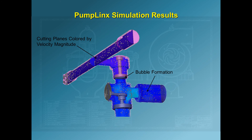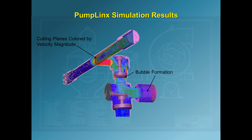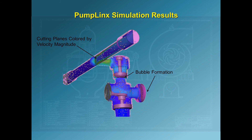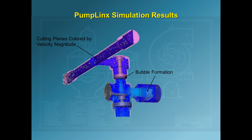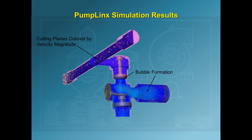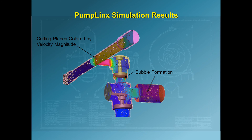Here we see the flow field colored by velocity magnitude, seeded with massless particles for flow visualization. Bubbles are formed in the piston chamber and under the valve outlet due to the pressure drop during the expansion stroke as the fluid opens the inlet valve at the bottom.